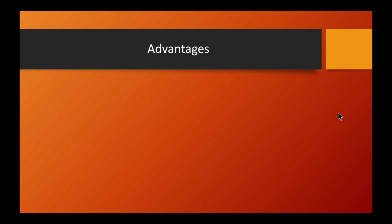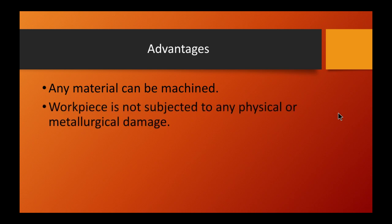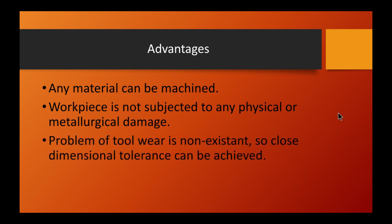Advantages of electron beam machining include: any material can be machined; the workpiece is not subjected to any physical or metallurgical damage; the problem of tool wear is non-existent; close dimensional tolerances can be achieved; and it is an excellent technique for micro-machining.